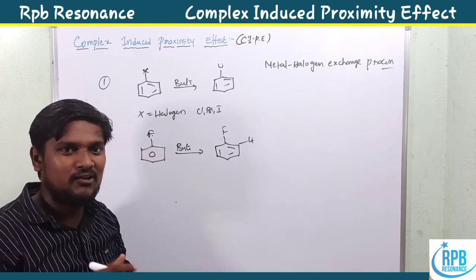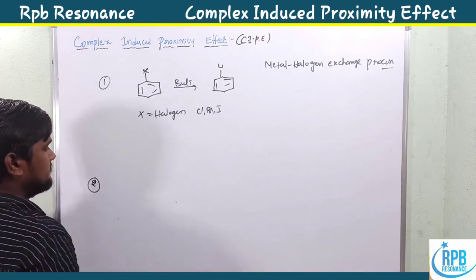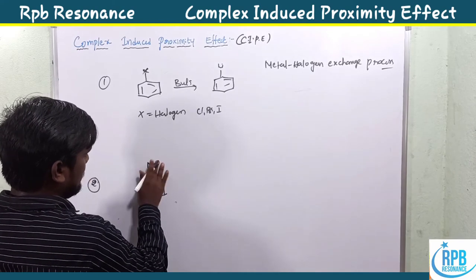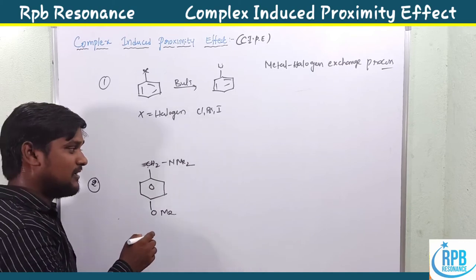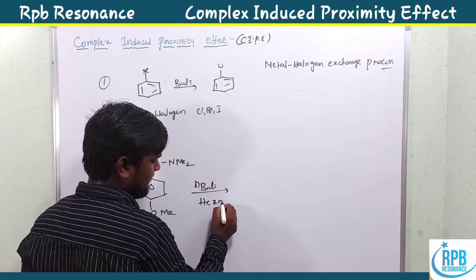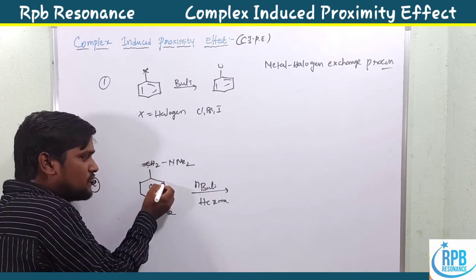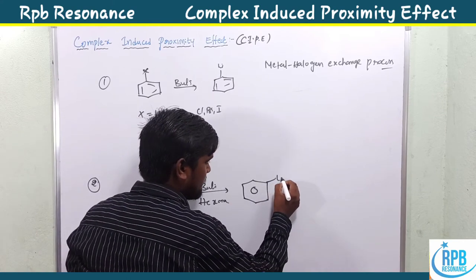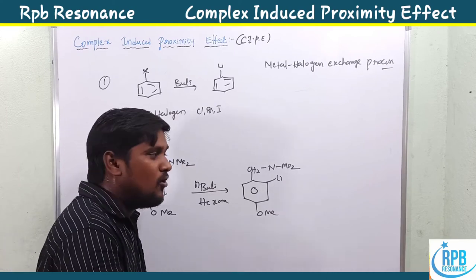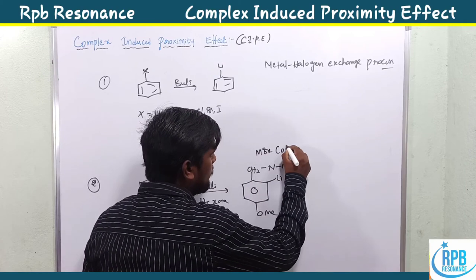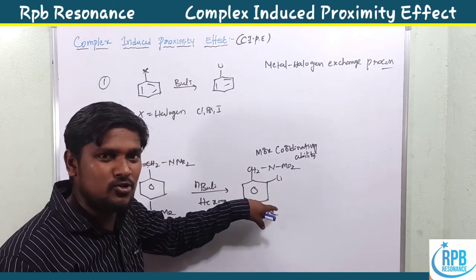The second exception: when a substrate has two types of functional groups — one nitrogen-containing and one oxygen-containing — for example, a substrate with a CH₂N(CH₃)₂ group and an O-methyl group. When we use n-butyl lithium in hexane solvent, it directly attacks the ortho position with respect to nitrogen. The nitrogen group has more coordinating ability, so it directs metalation to its ortho position rather than to the O-methoxy group.